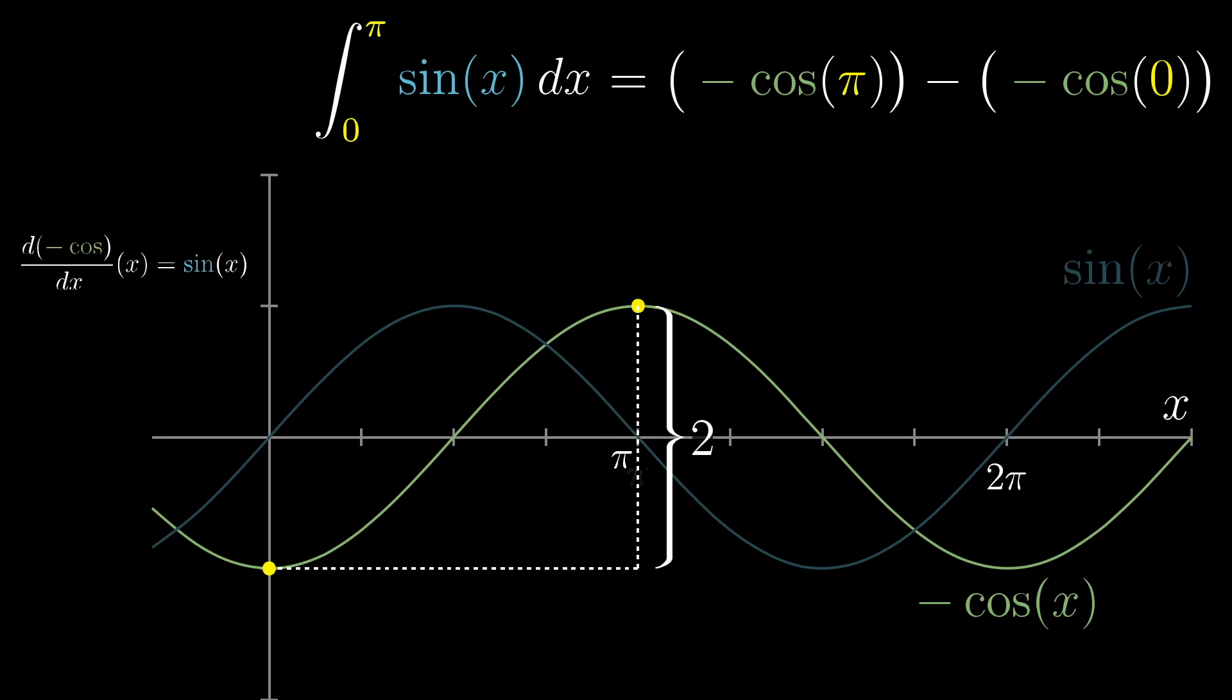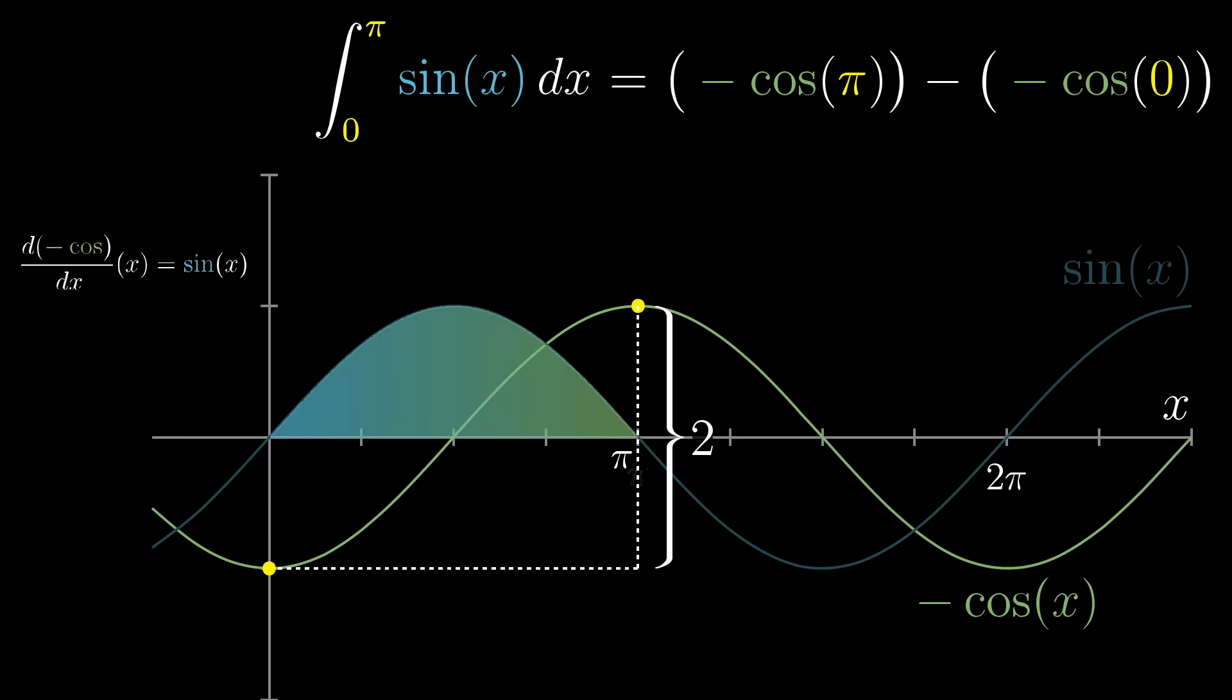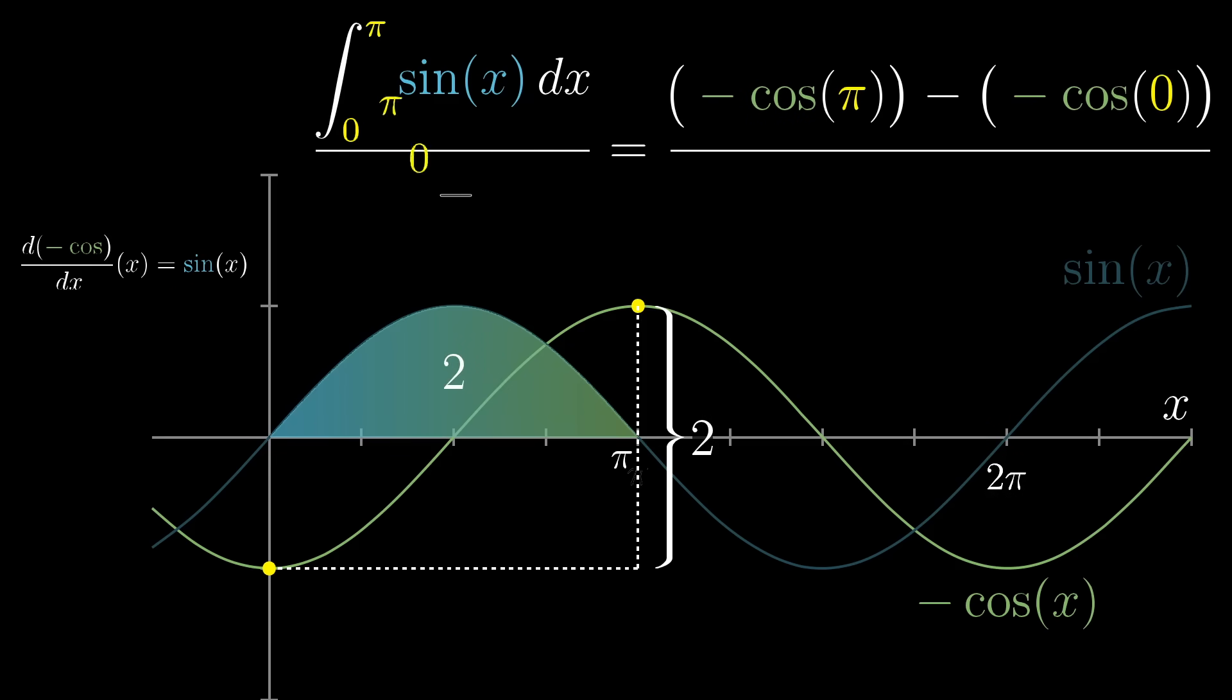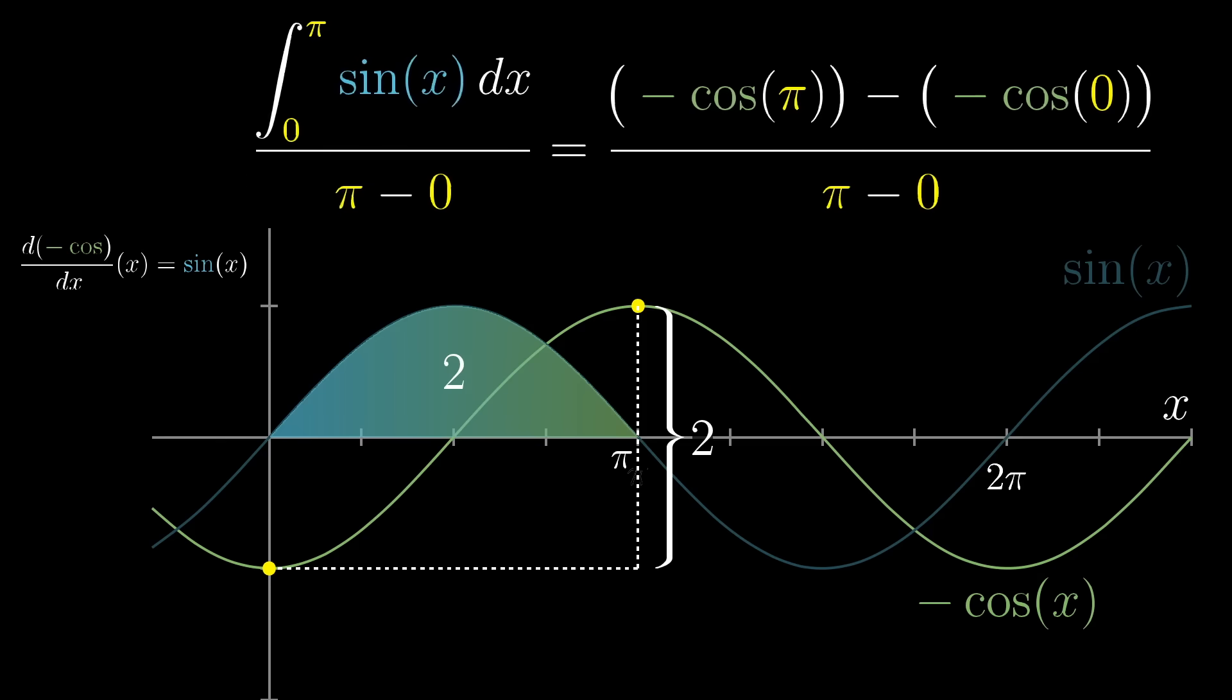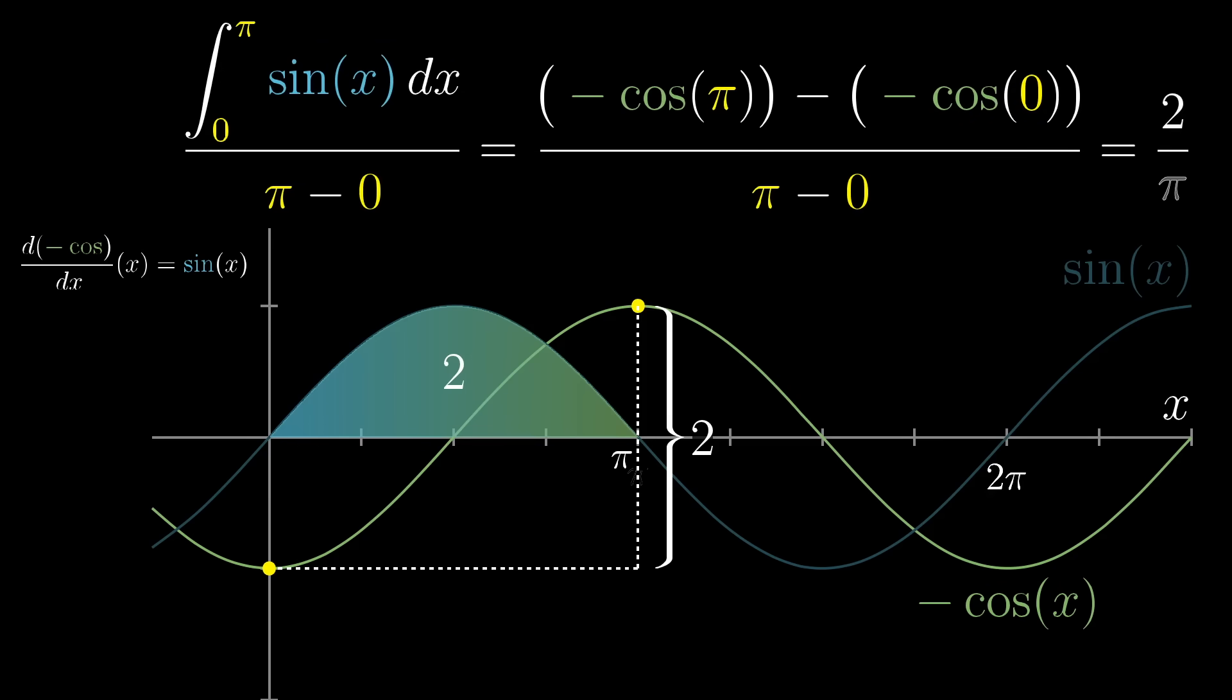That's kind of interesting, isn't it? That the area under this sine graph turns out to be exactly two? So the answer to our average height problem, this integral divided by the width of the region, evidently turns out to be 2 divided by pi, which is around 0.64.